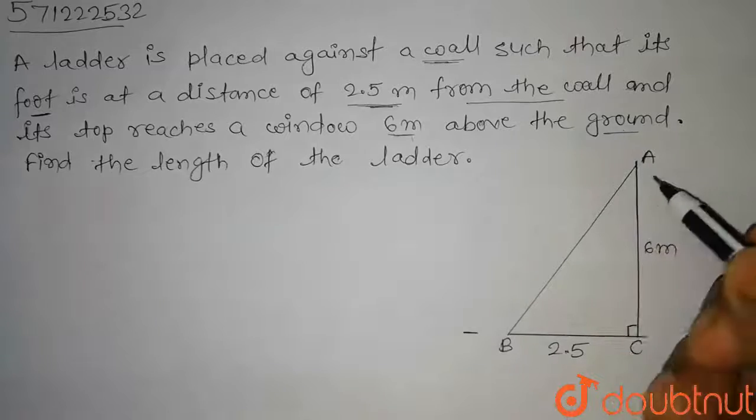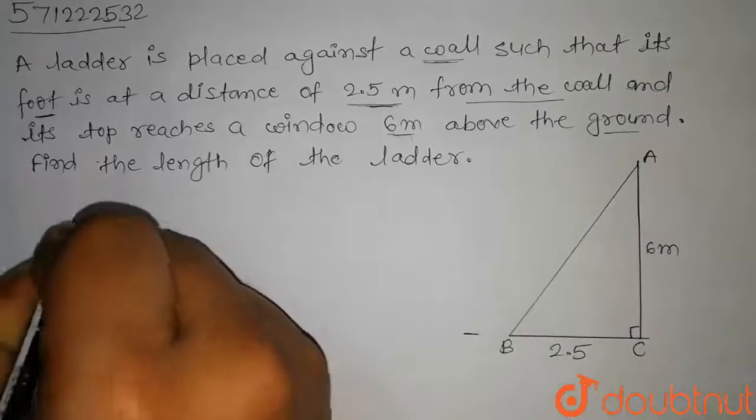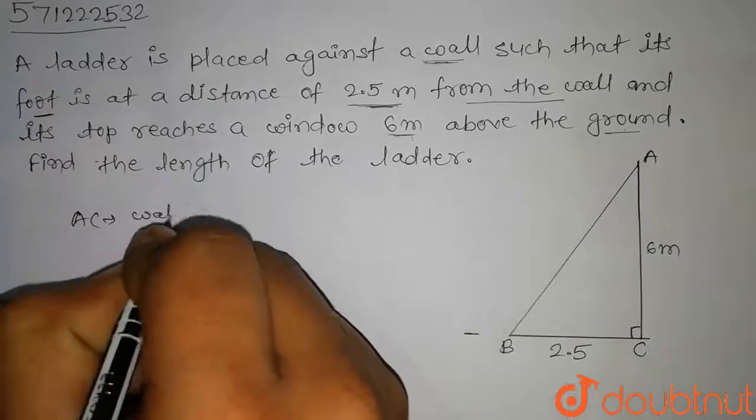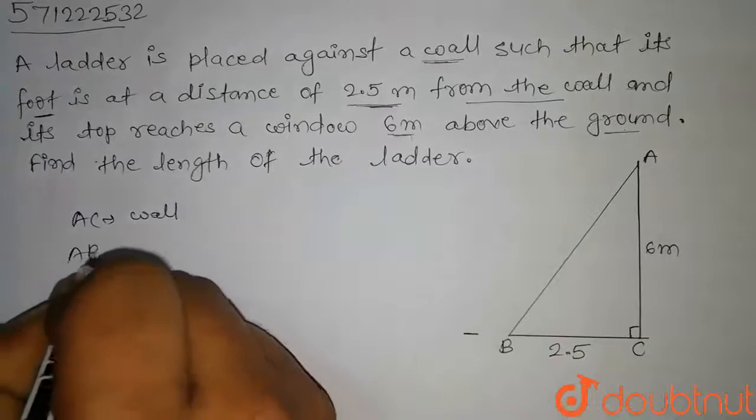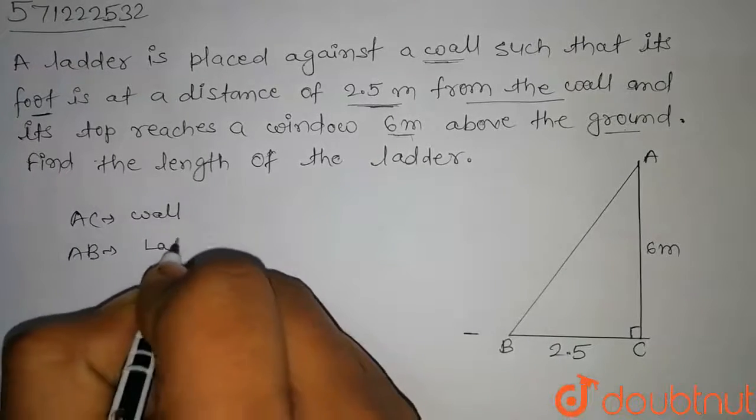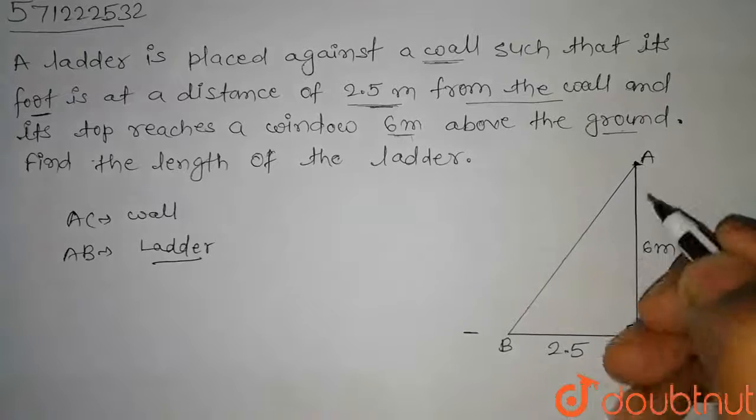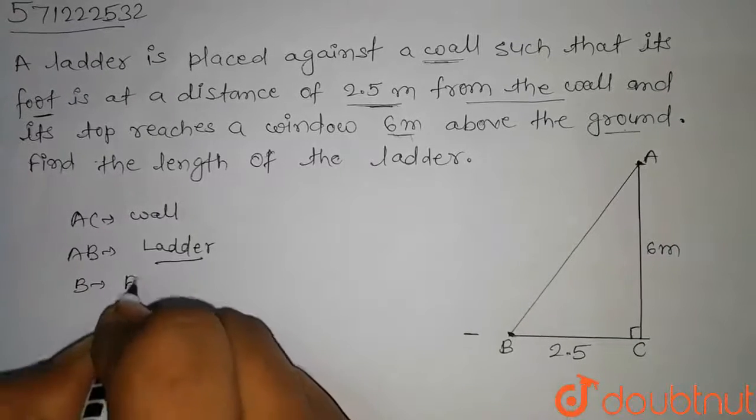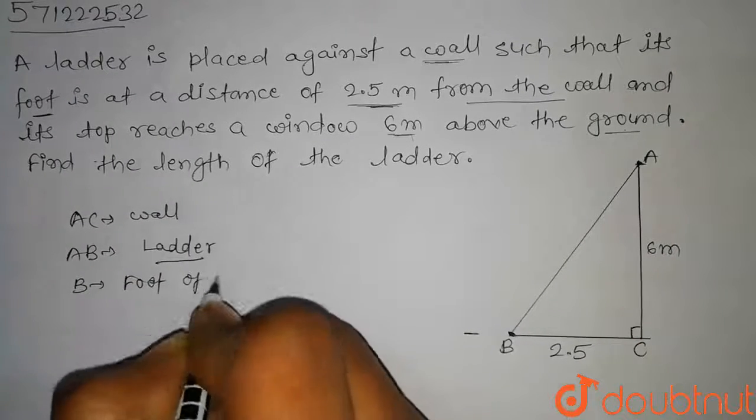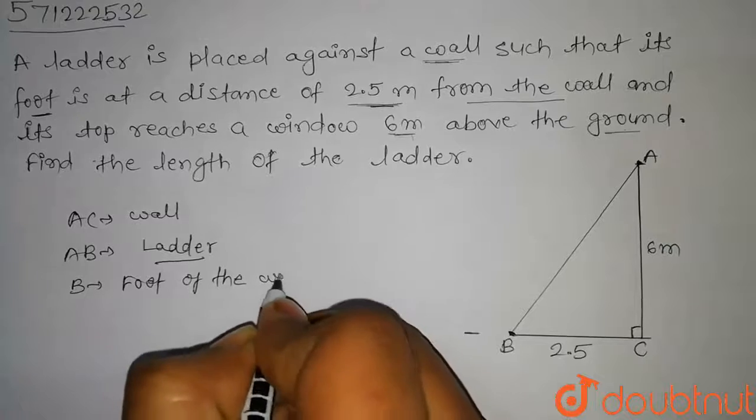If you see this figure, AC is our wall and AB is our ladder. Point A is our window and point B is the foot of the wall.